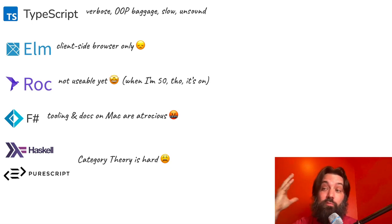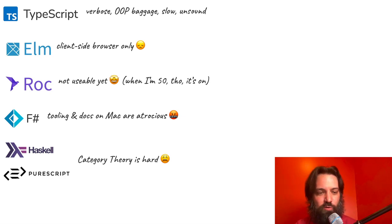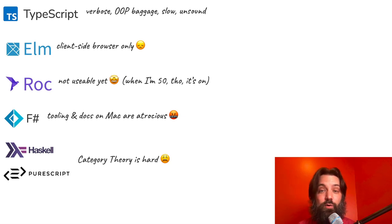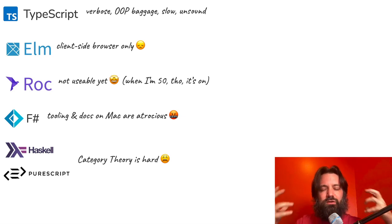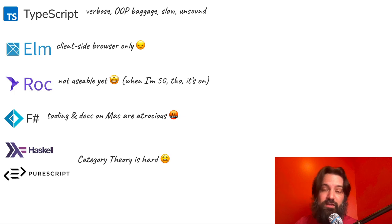Haskell and PureScript are pretty much what I'm looking for, especially PureScript because it fits into the Node ecosystem. The challenge is Category Theory is super hard. You don't need to know anything about Category Theory to be productive in functional programming, but they're based on it. As soon as you want to do an HTTP call — which is 99% of what I want to do — you have to know about the IO Monad. And at my work, SSL cert rewriting makes it very difficult to install packages.